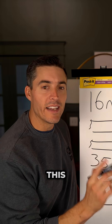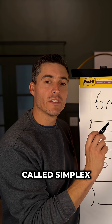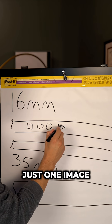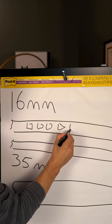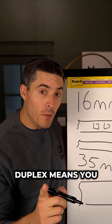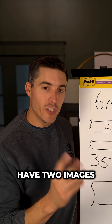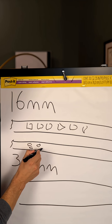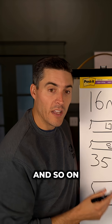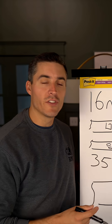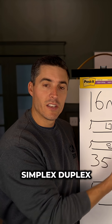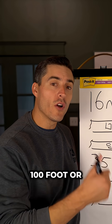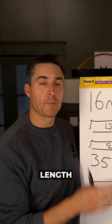The images are going to look like this. This is what's called simplex, meaning one image per frame — you see it's just one image, image, image. Duplex means you have two images per frame like this, and so on. So you have either simplex or duplex, 100 foot or 215 feet in length.